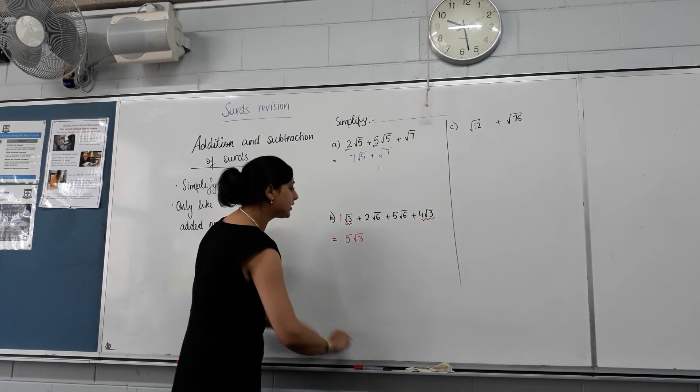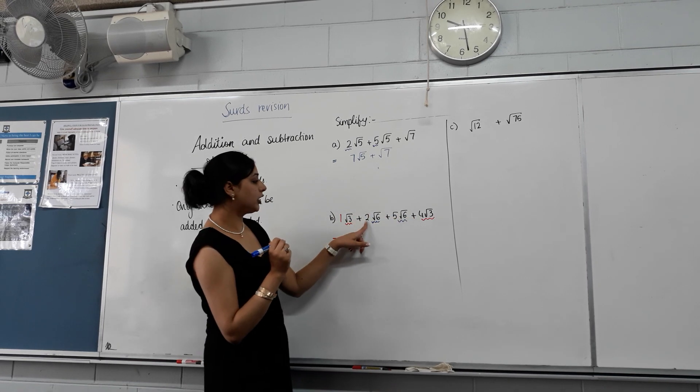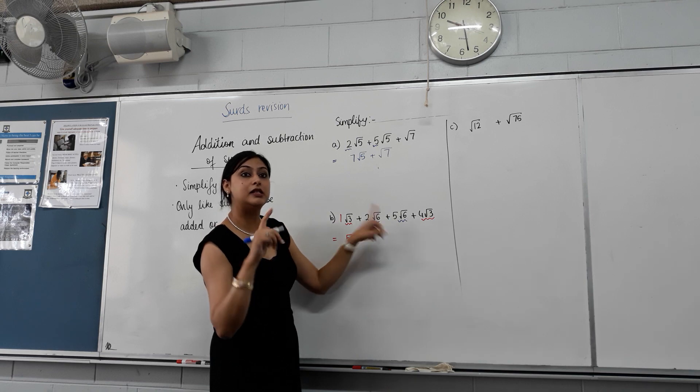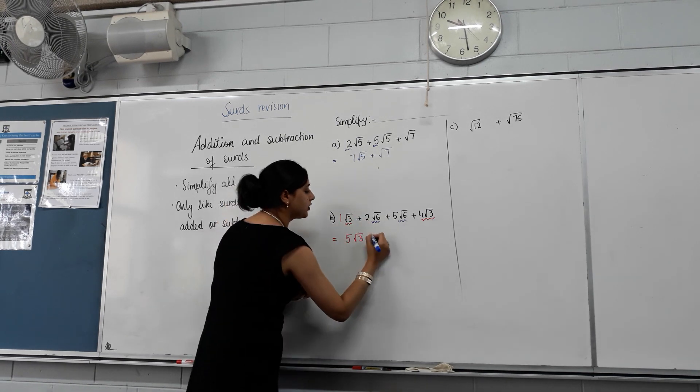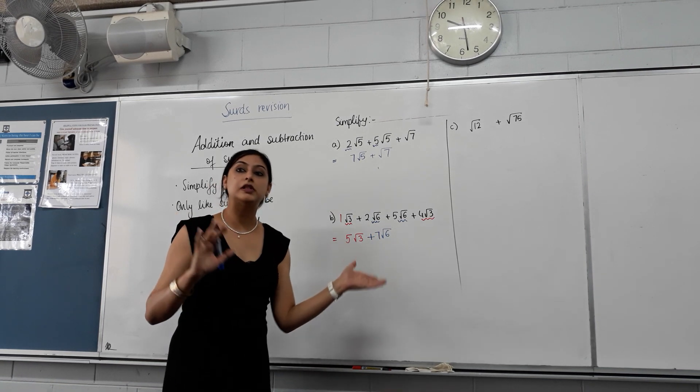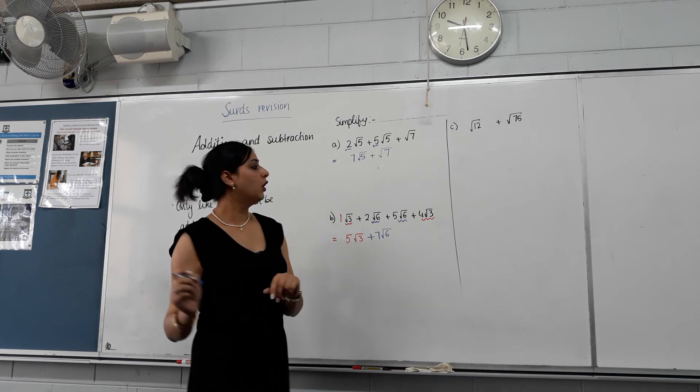Then I've got, so like surds here. Yes? How many lots of root six? Two. And? Five. And means plus. So two plus five? Seven. Seven lots of root six. Can I add them now somehow? No. They're like apples and oranges. We cannot add them. Yes? Awesome.